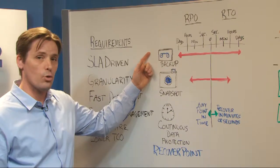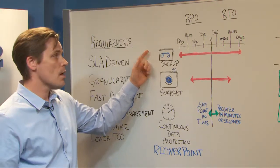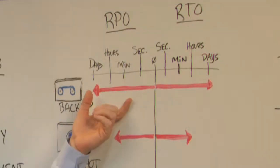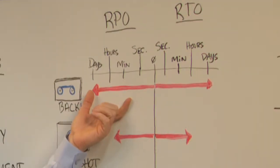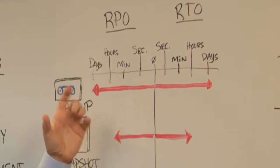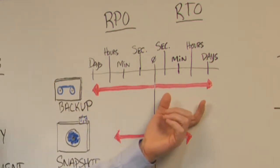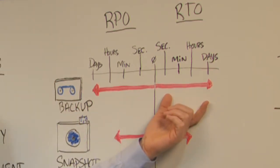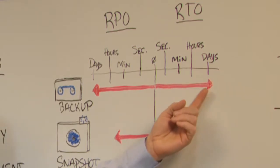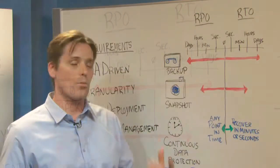Backup is a common tool for organizations to use to protect their data. But the challenge with backup is that the Recovery Point Objective, which is the amount of data that can be recovered, is usually very long, and the Recovery Time Objective, which is the amount of time it takes to go from a failure to a recovered state, is also very long. Typically, this can be measured in a day or more.